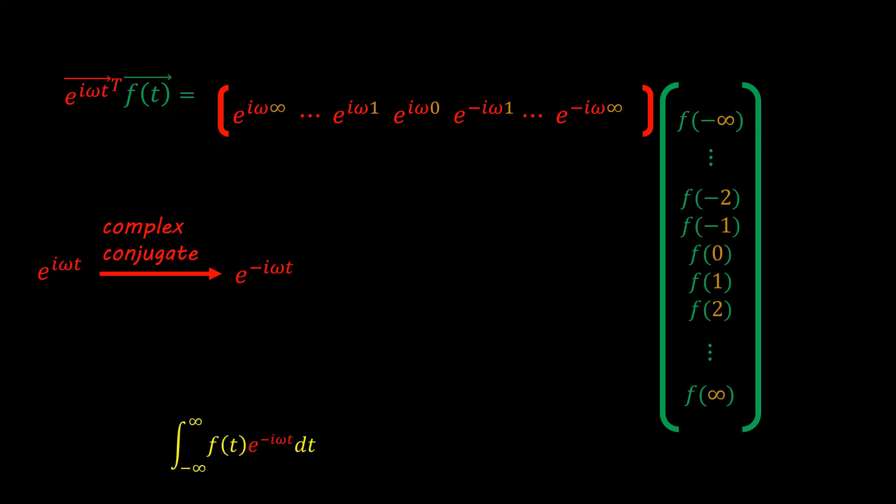This complex conjugate is what you see in the Fourier transform, e to the negative iωt. So if you've been wondering where that negative sign comes from, it comes from this rule. So if we set t equal to positive 1, we get e to the negative iω times 1.